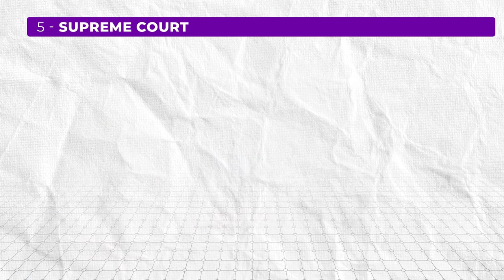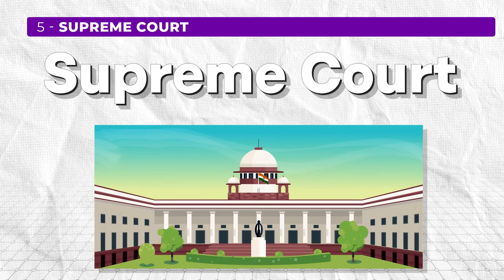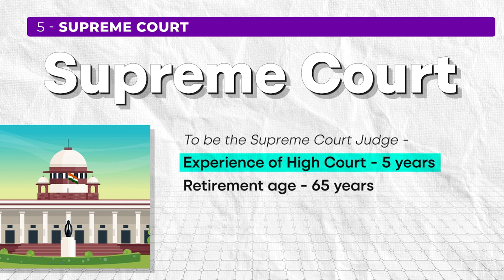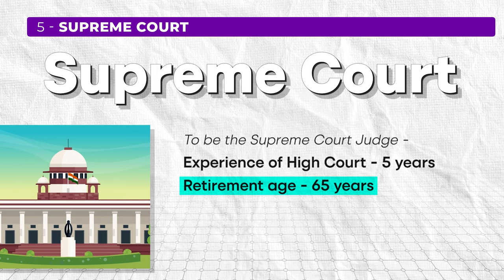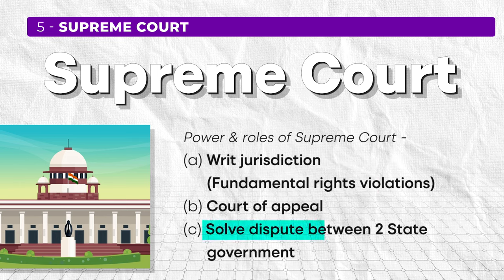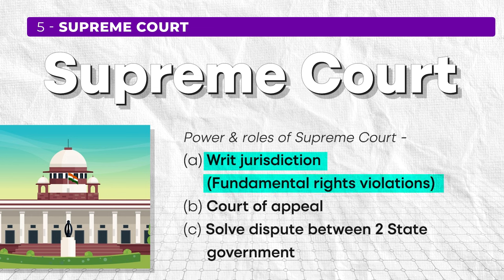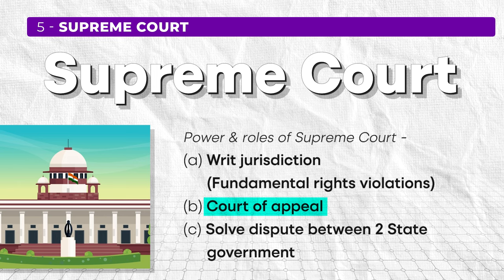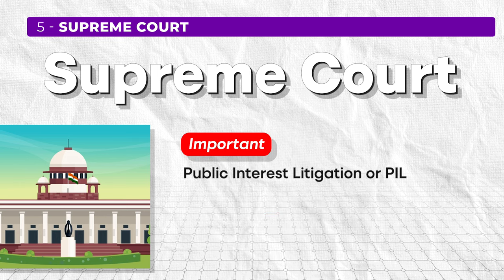Another important topic asked in UGC Net Paper 1 is the Supreme Court. Supreme Court judges are appointed by the president, and to be a Supreme Court judge, one must have experience in the High Court for five years. The retirement age for Supreme Court judges is 65 years. Functions of the Supreme Court include resolving disputes between two states, and if any person feels their fundamental right has been violated, they can directly appeal to the Supreme Court. Any person who has lost a case in the High Court can also appeal. There is also Public Interest Litigation (PIL) — if a person is unable or lacks resources to fight a case, anyone else can file and fight it on their behalf in the interest of the country.